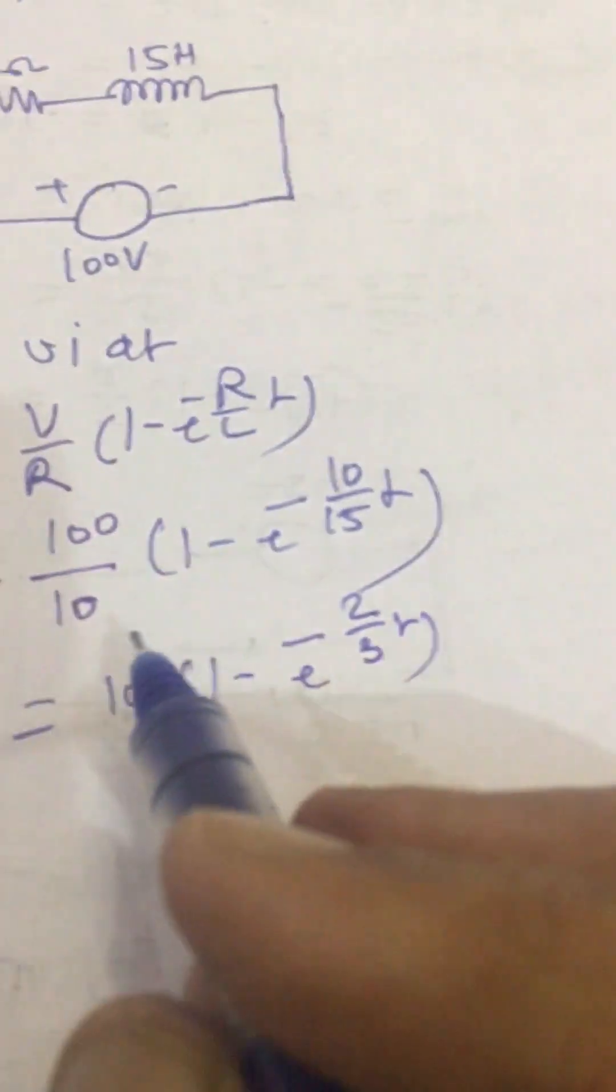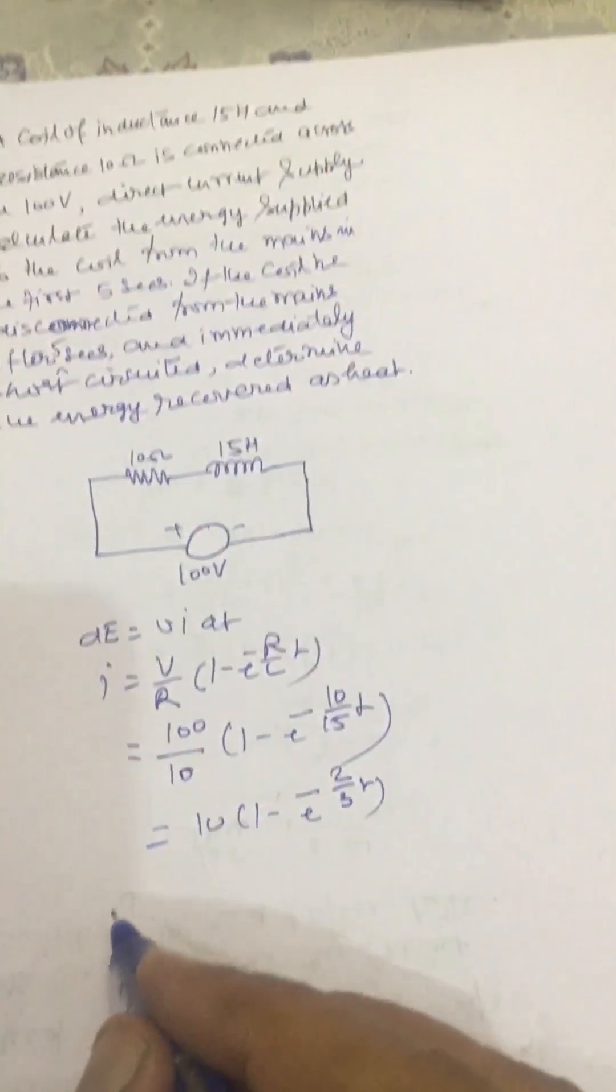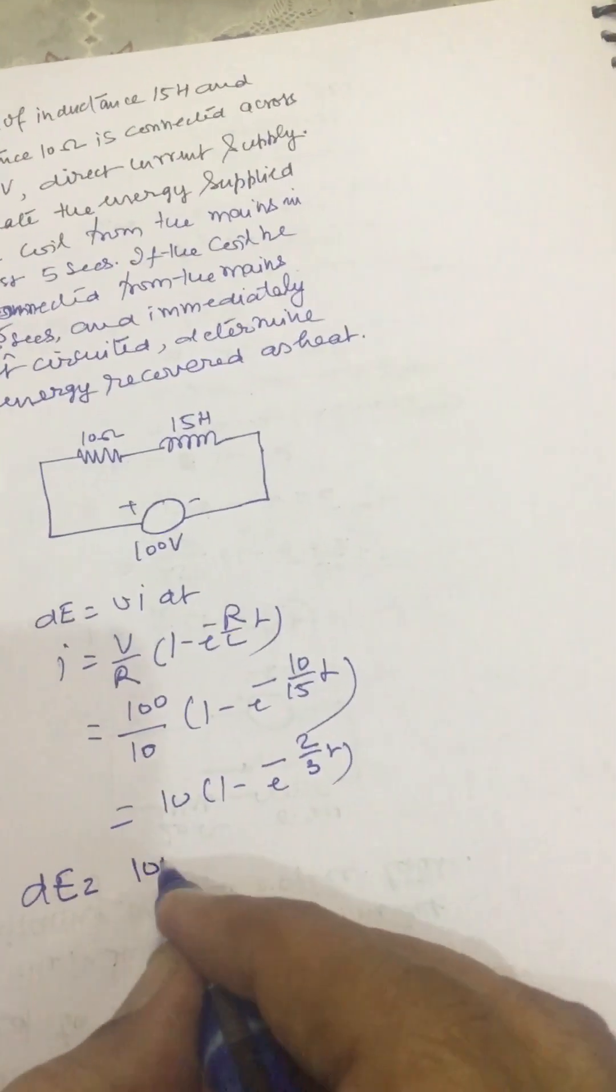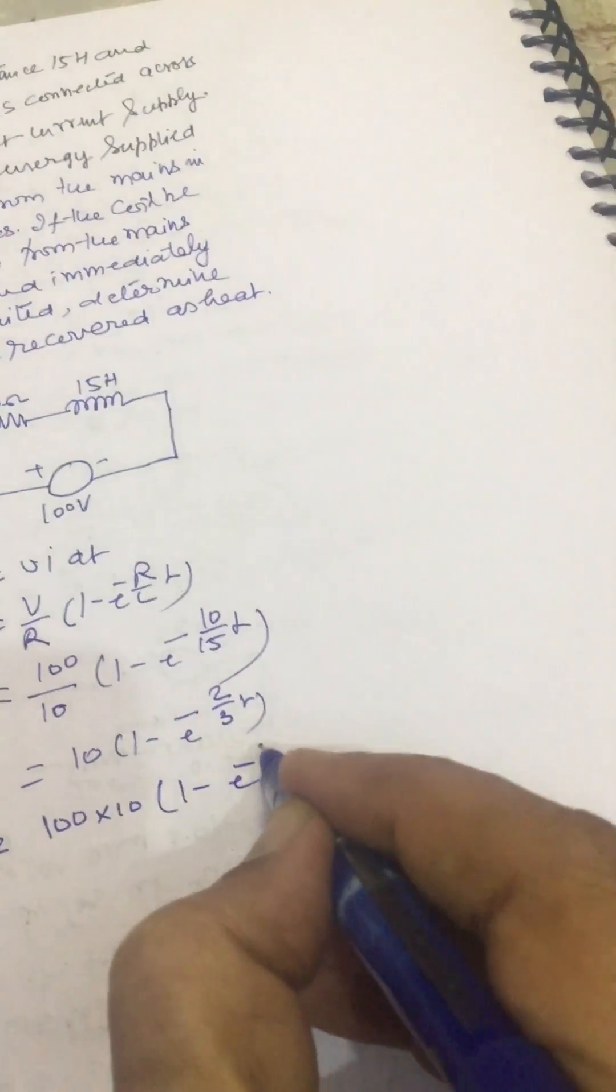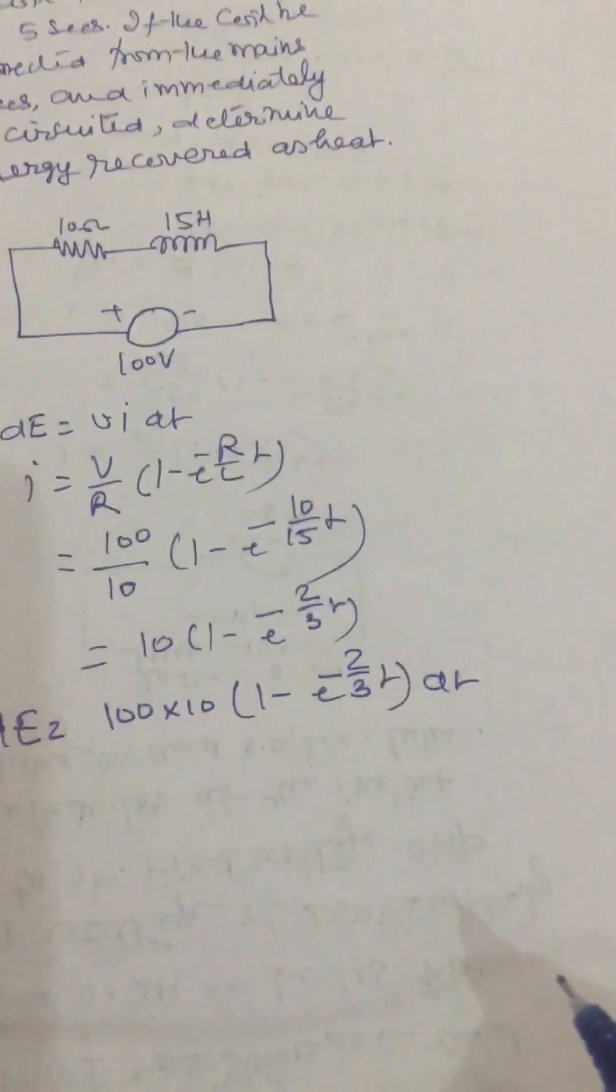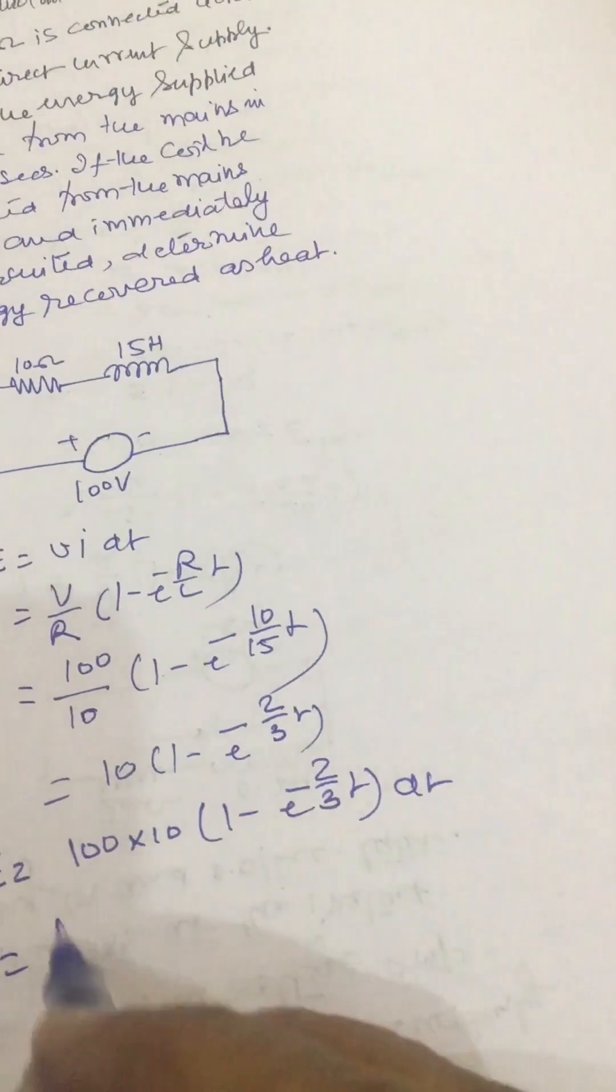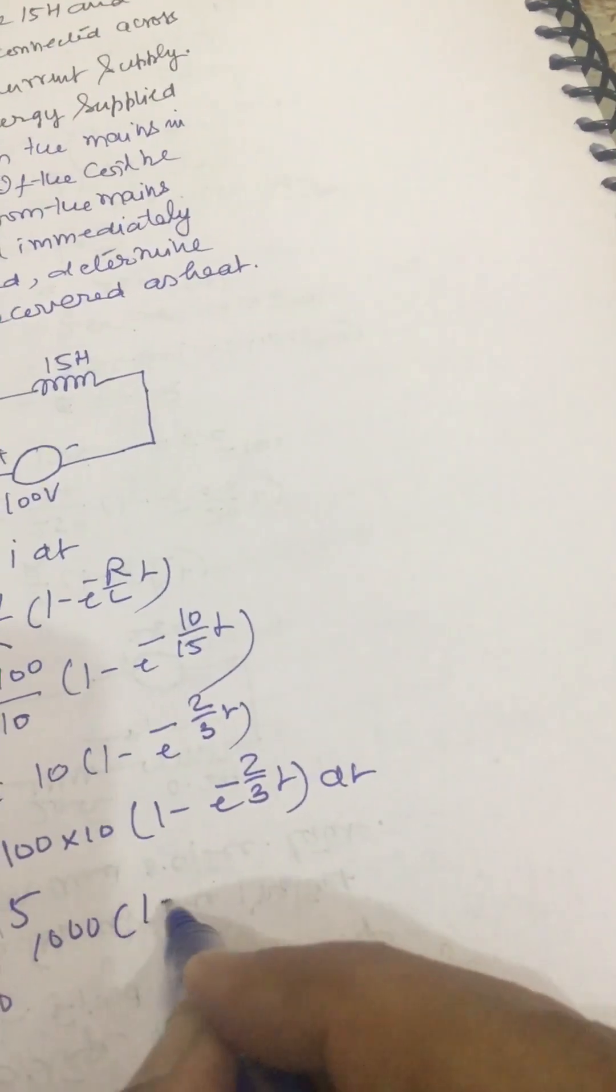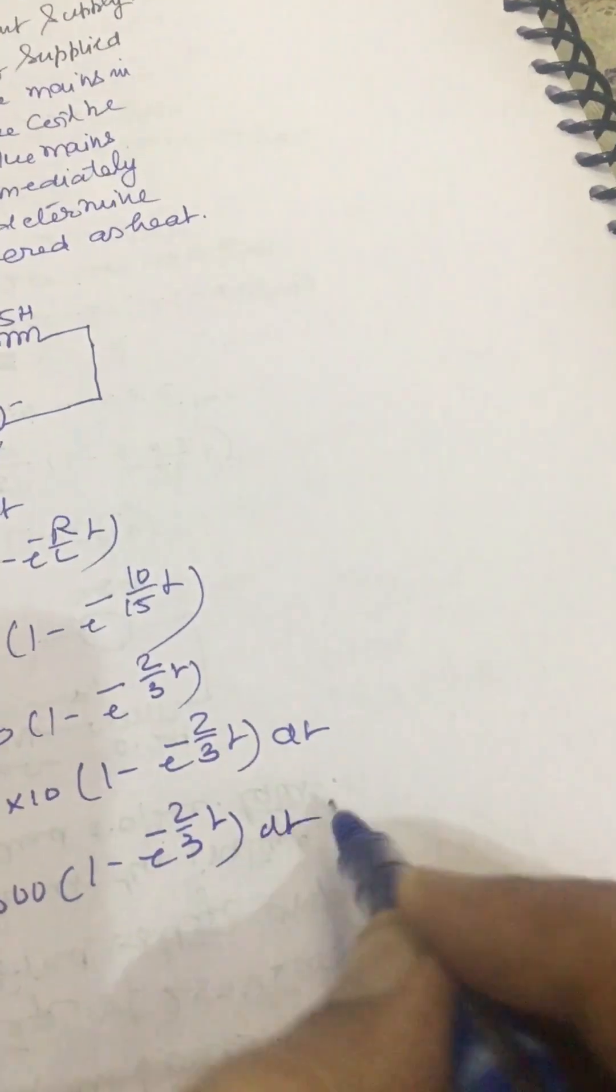Energy supplied in dt seconds will be given by V is 100 and I is 10 times 1 minus e to power minus 2t/3 dt. So energy supplied in 5 seconds will be the integral from 0 to 5.